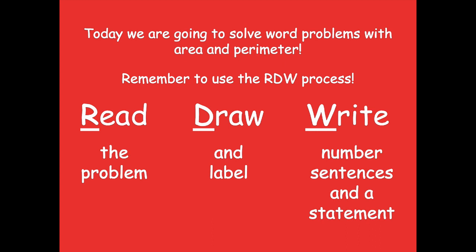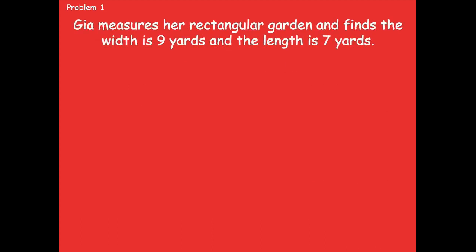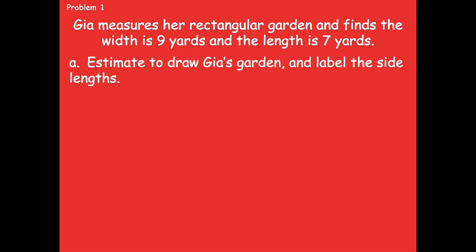Let's get started with problem one. It says Gia measures her rectangular garden and finds the width is nine yards and the length is seven yards. Part A says estimate to draw Gia's garden and label the side lengths. It's telling you in the problem what the shape is and it's telling you the side lengths, so you should be able to draw a picture of this garden, no problem.